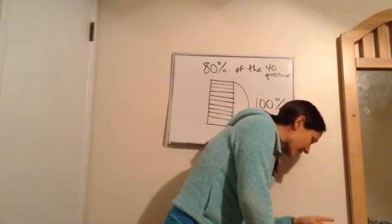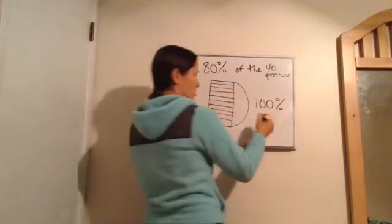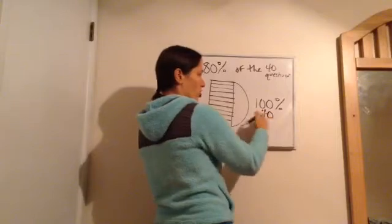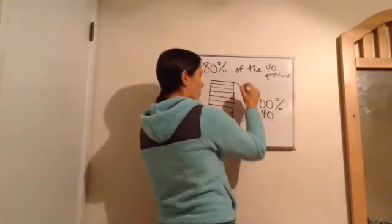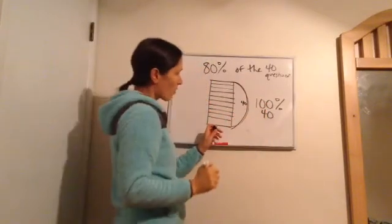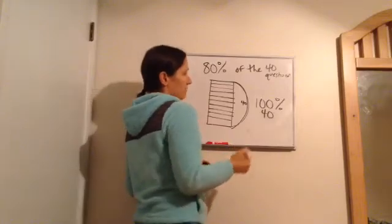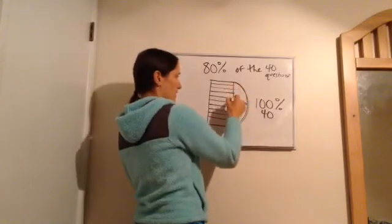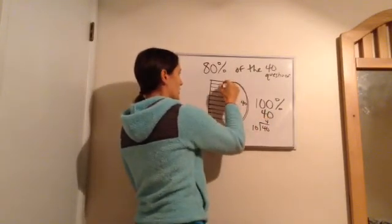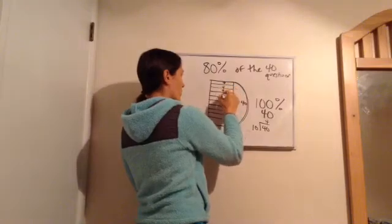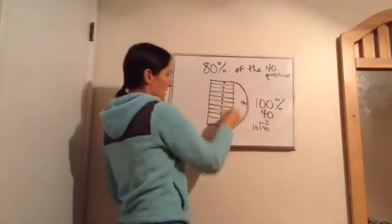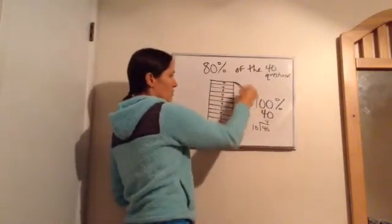Now, here's what it says. Brittany correctly answered 80% of the 40 questions. So how many did the test have, 40 questions total? Out of 100%, there were 40 total. So I'm also going to put 40 right here to show that 40 problems. So if I had 40 problems and I have 10 different spaces to break it up into, 10 goes into 40 four times. So each of these have four questions.